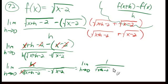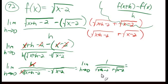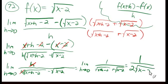So we have the limit as h approaches 0 of 1 over square root of x plus h minus 2 plus square root of x minus 2. As h goes to 0, that becomes 1 over square root of x minus 2 plus square root of x minus 2, which is 2 times the square root of x minus 2. So the limit of that difference quotient is 1 over 2 times the square root of x minus 2. A little complicated, but there you go. I hope that was helpful, thanks for watching.